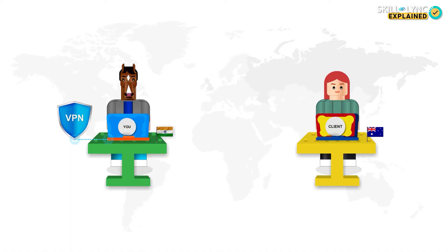VPNs are not just about being anonymous on the internet — they also allow you to access content to which you would normally not have access. For example, if you work for an organization in Australia and need to access their servers while sitting in India, a VPN will allow you to connect to the Australian servers by masking your geographical location. This is a day-to-day affair in large organizations.